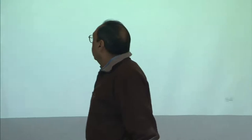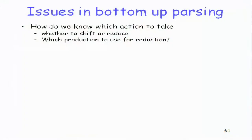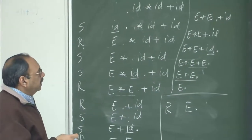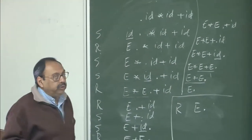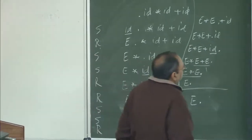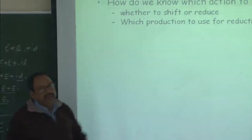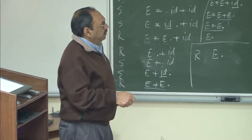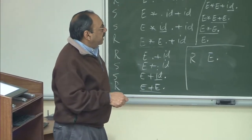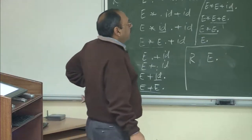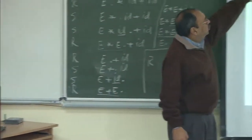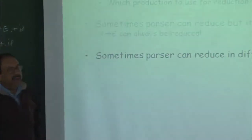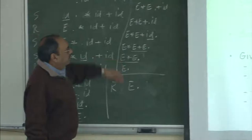Let us look at the issues I may face in bottom-up parsing. The first question — which you have not answered — is when to shift and when to reduce. I should also be able to say which production to use for reduction, because there may be situations where more than one right-hand side of a production matches. Sometimes I can have a reduction like X goes to epsilon which can always be done, but we do not want that. Sometimes the parser can reduce in different ways.